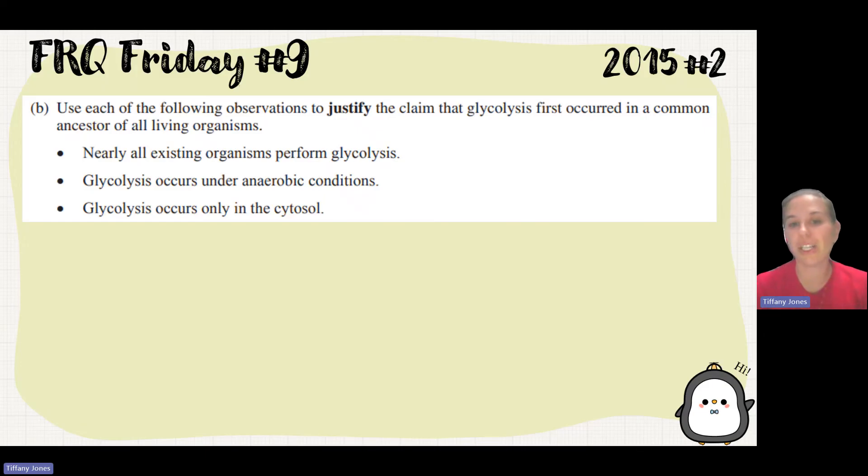Glycolysis occurs under anaerobic conditions. Anaerobic just means without oxygen. Early earth didn't have any oxygen. So that would be a way that we could justify that claim, by saying that glycolysis must have taken place before the oxygen started existing in the atmosphere. And then the last thing, glycolysis occurs only in the cytosol. This means it must have taken place before there was something that had that membrane.